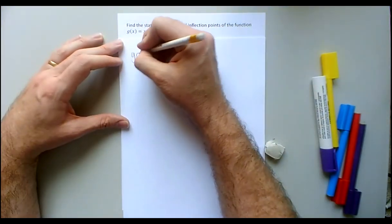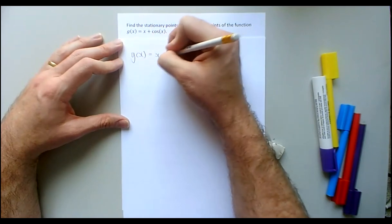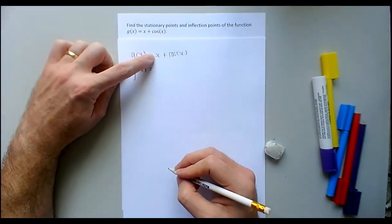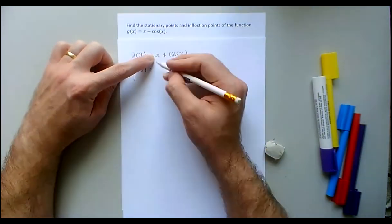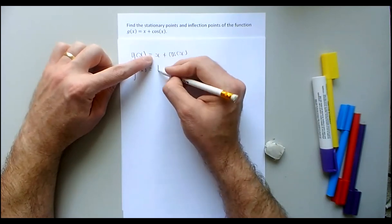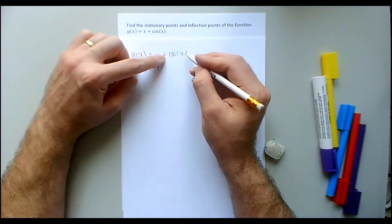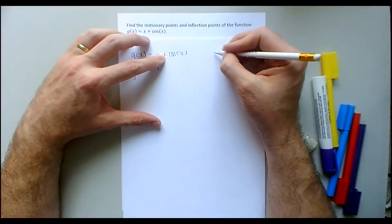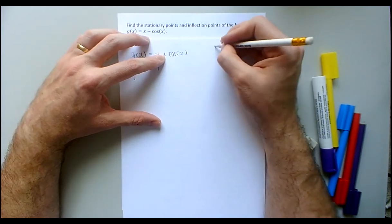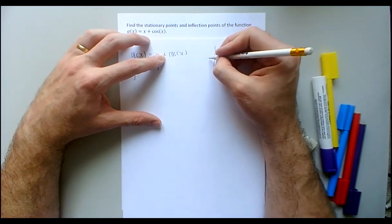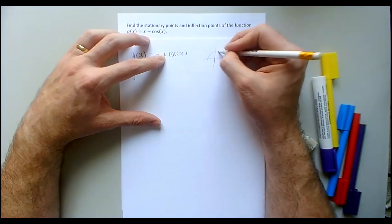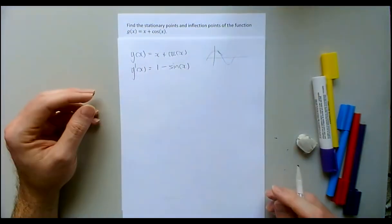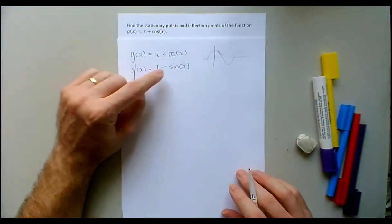g(x) = x + cos(x), so g'(x) is 1 — the derivative of x is 1, that's the coefficient which is secretly a one — and the derivative of cos(x)... I know it's sine of x but is it plus or minus? cos looks like this and it starts out having negative slope, so it's going to be minus sin(x).